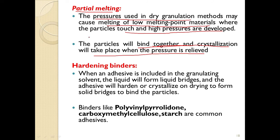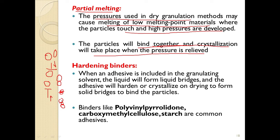Under pressure, the material melts; when pressure is removed it solidifies and crystallizes, binding the particles. Consider two particles — when pressure is applied they come together, the interface melts into a liquid under pressure, and when pressure is removed this liquid becomes solid and forms a solid bridge between the two particles. This is the mechanism of partial melting.